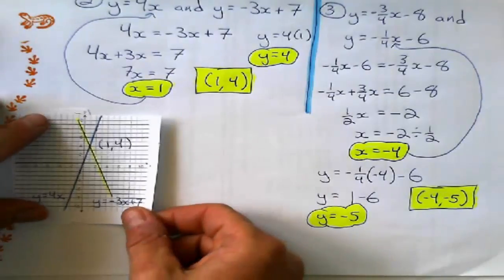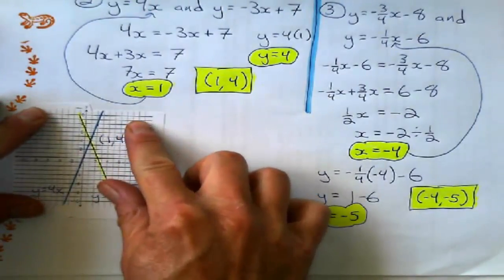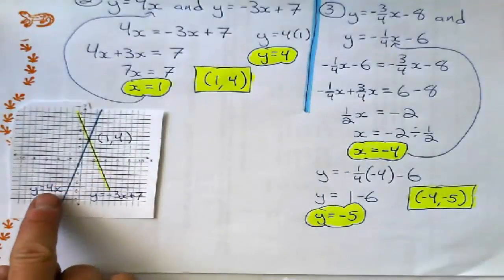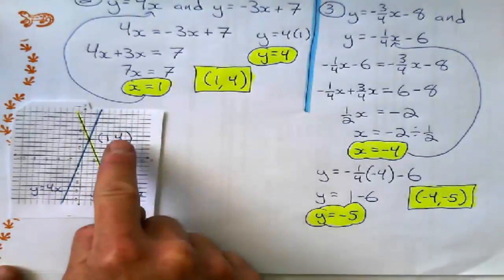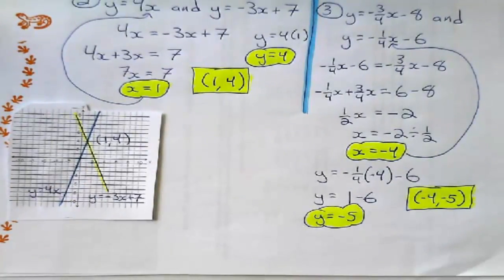Now, what I want to look at is just, what would these look like on a graph? This second equation here. There's the graph of y equals 4x. There's y equals negative 3x plus 7. There's my point of intersection, 1, 4. Of course.